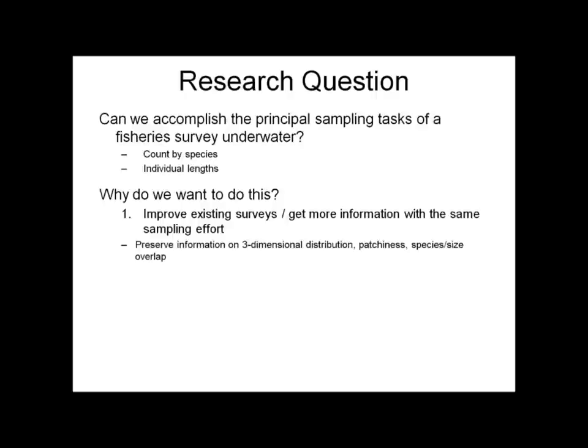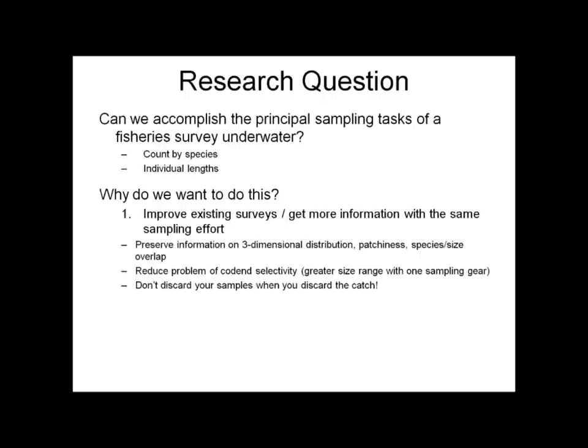We can preserve information on three-dimensional distribution at very fine scale, look at patchiness, species and size overlap. We can reduce the problem of selectivity in the cod end. With this gear we're able to sample individuals from cod over a meter long to euphausiids at sub-centimeter scales. We also don't discard our samples when we discard the catch because we have a full inventory of all the images, so it's possible to reuse that survey data in completely new ways at later dates — also for things like quality checking catch information.